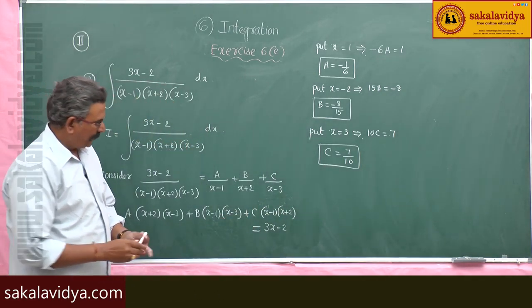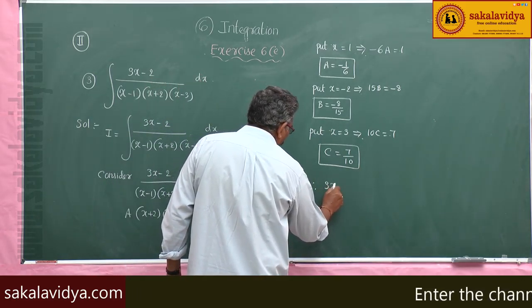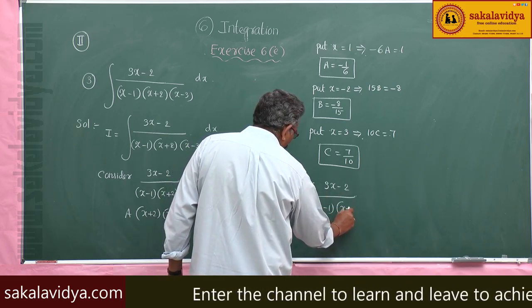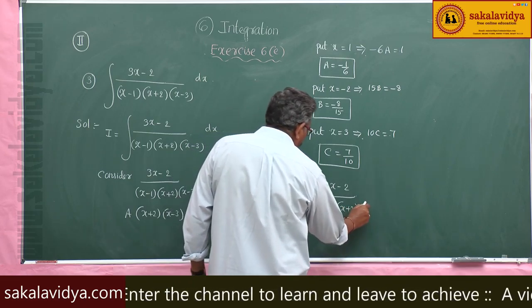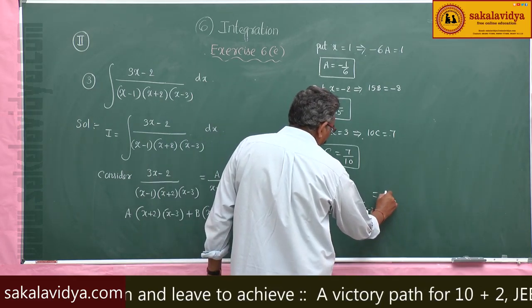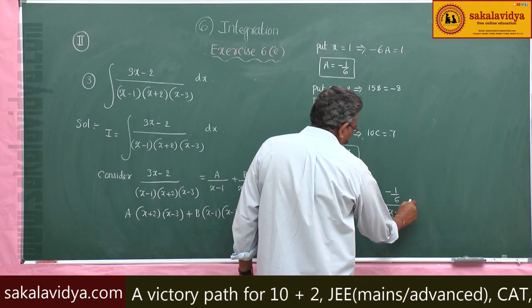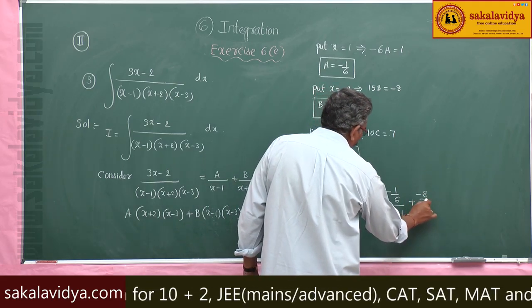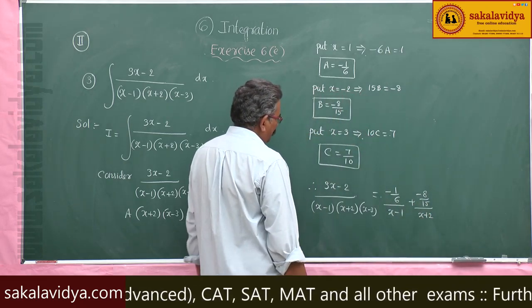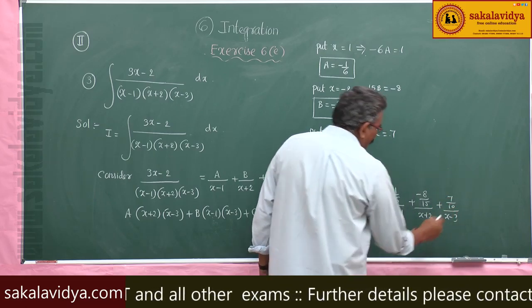So now the partial fractions are: (3x minus 2) over (x minus 1)(x plus 2)(x minus 3) equals (minus 1/6) over (x minus 1) plus (minus 8/15) over (x plus 2) plus (7/10) over (x minus 3). These are the partial fractions.